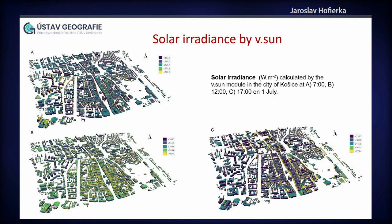This is a solar radiation map showing three time horizons. On the upper left is 7 o'clock in the morning, then there is noon, and on the lower right there is evening at 17:00 or 5 p.m. You can see that for buildings you have different values of solar irradiance that are directly translated to land surface temperature.